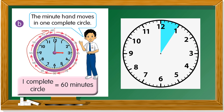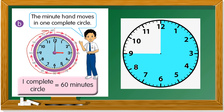Remember: twelve to one is five minutes. Continue — ten, fifteen, twenty, twenty-five, thirty, thirty-five, forty, forty-five, fifty, fifty-five. Lastly, sixty. One complete circle is sixty minutes.